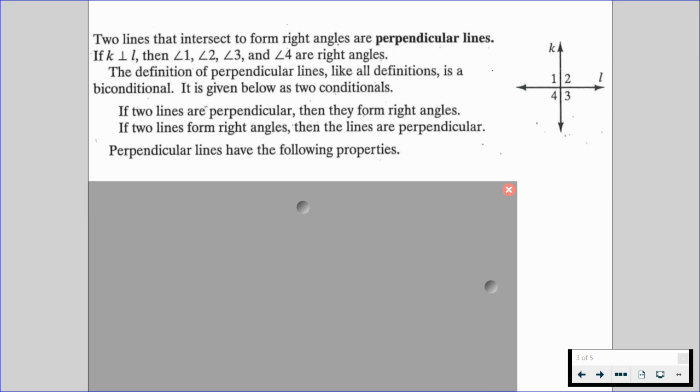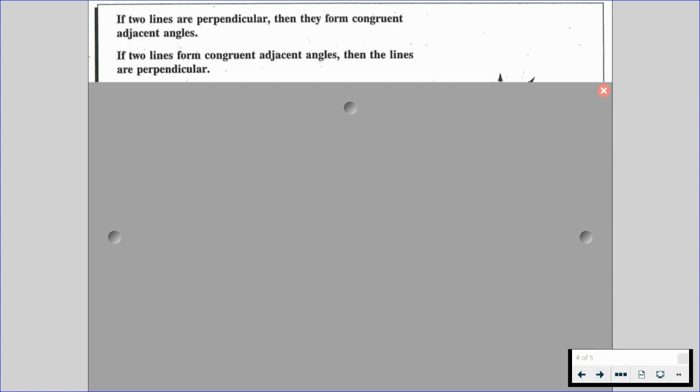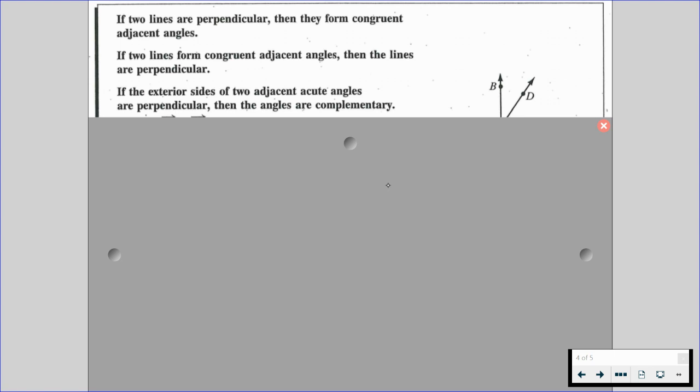Perpendicular lines have the following properties. If two lines are perpendicular, then they form congruent adjacent angles. If two lines form congruent adjacent angles, then the lines are perpendicular. If the exterior sides of two adjacent acute angles are perpendicular, then the angles are also going to be complementary.